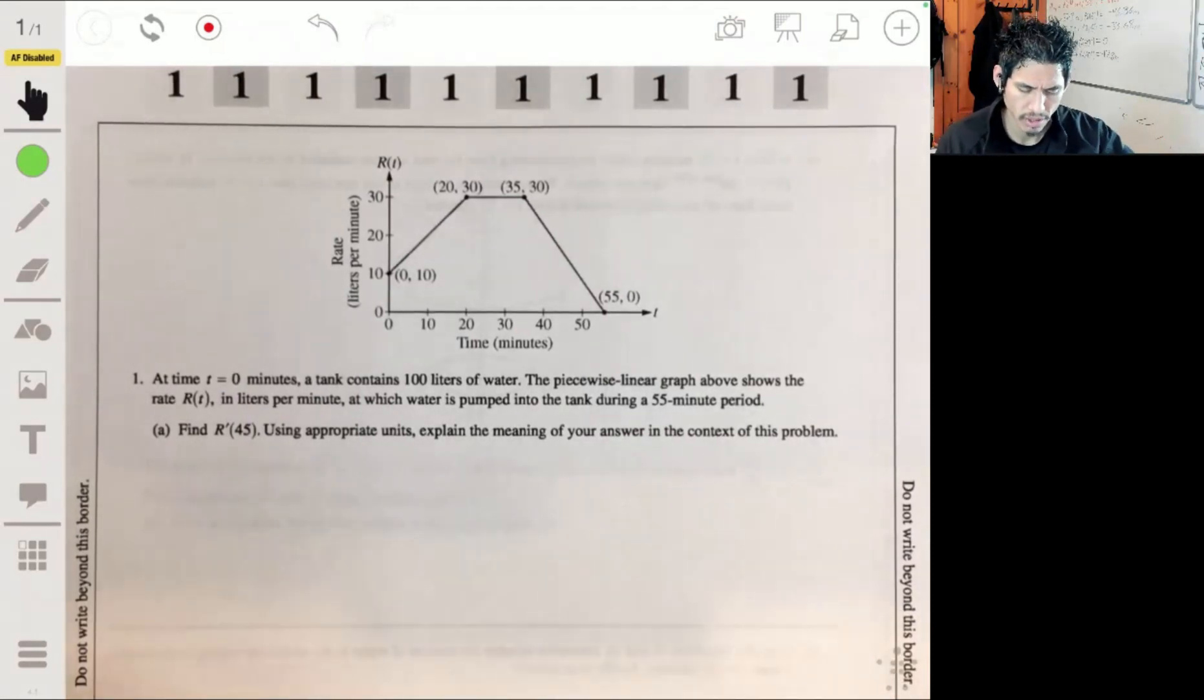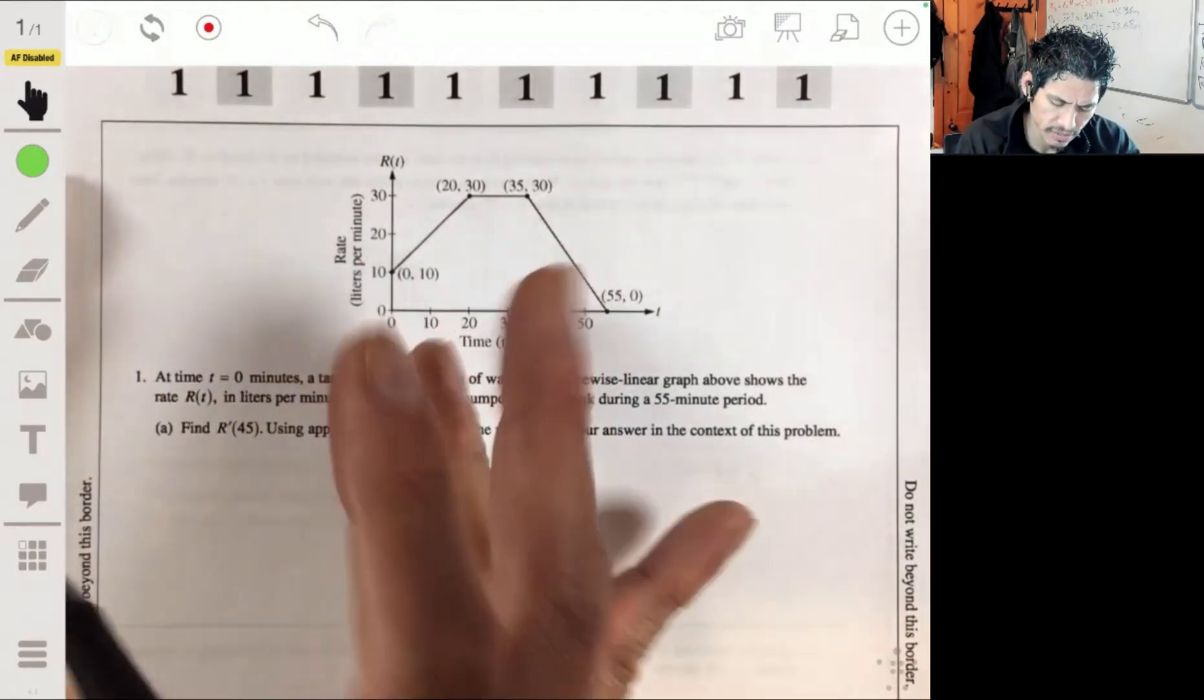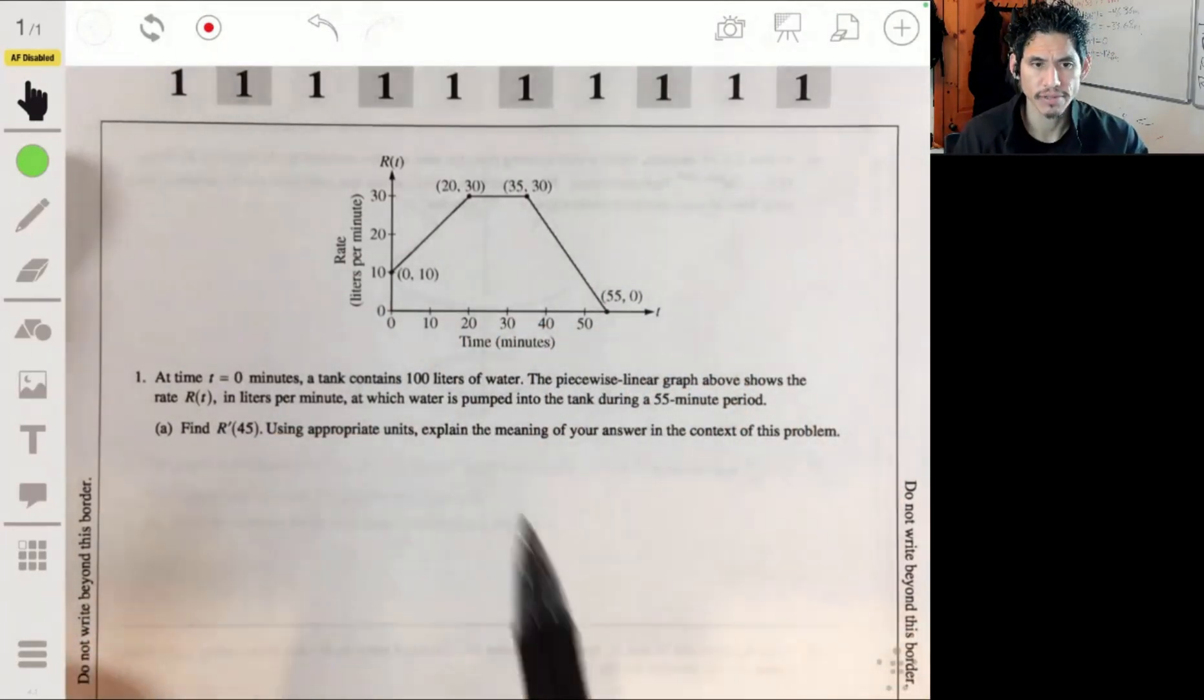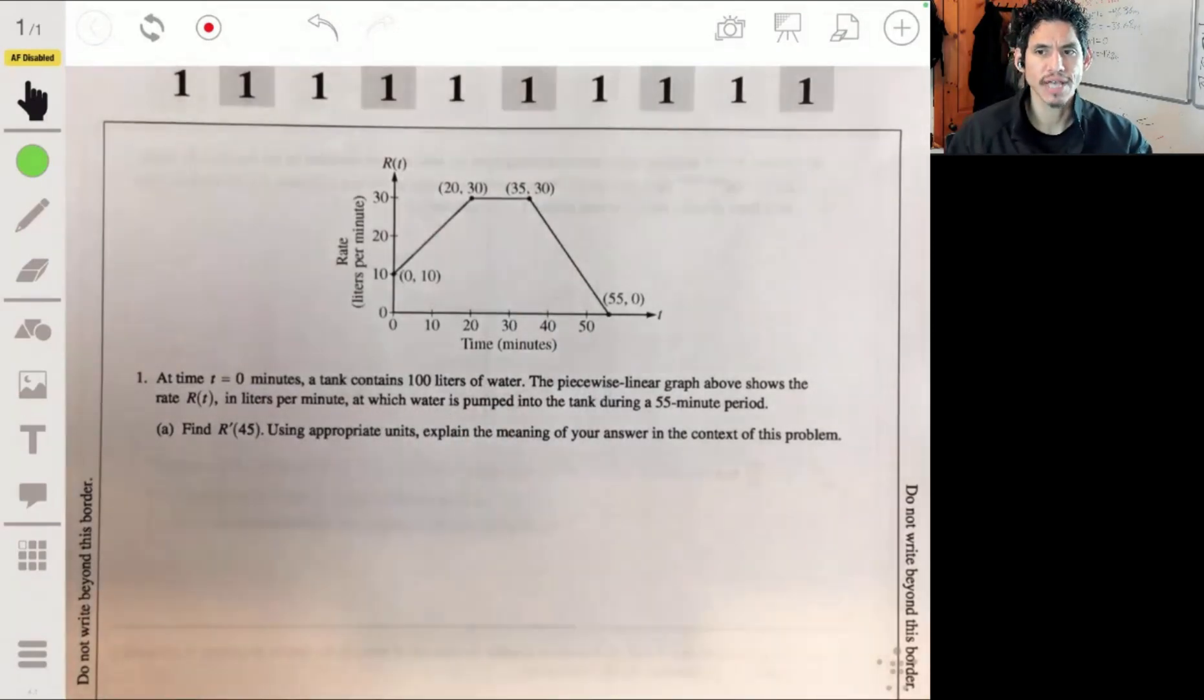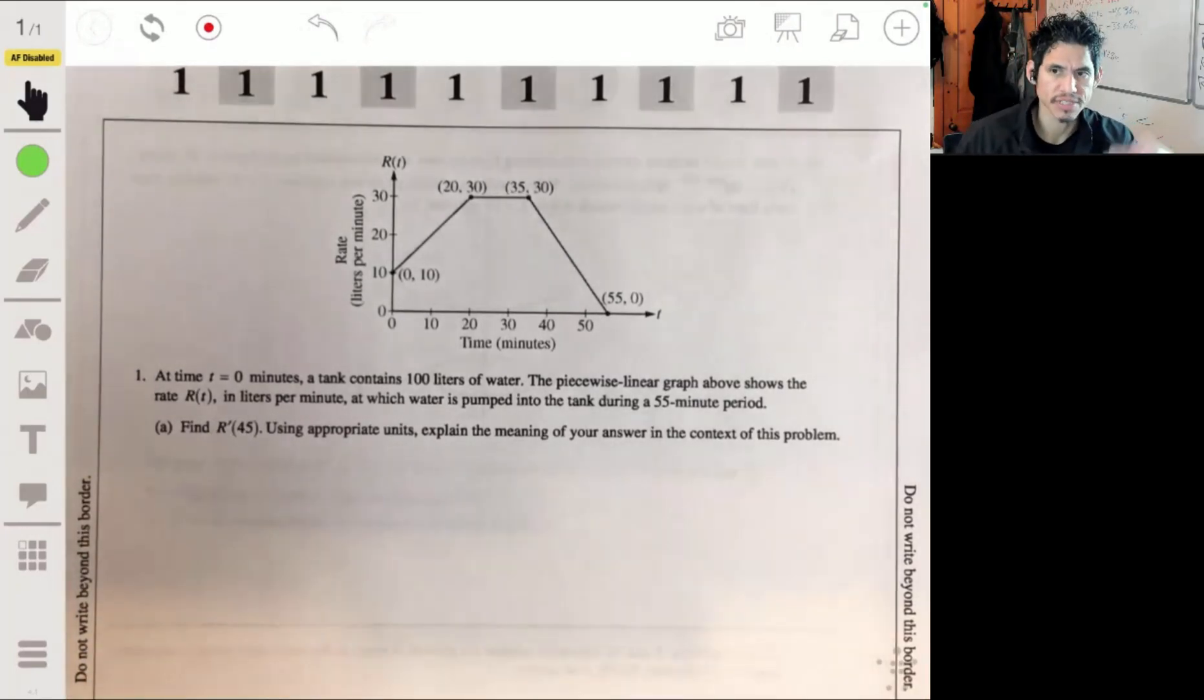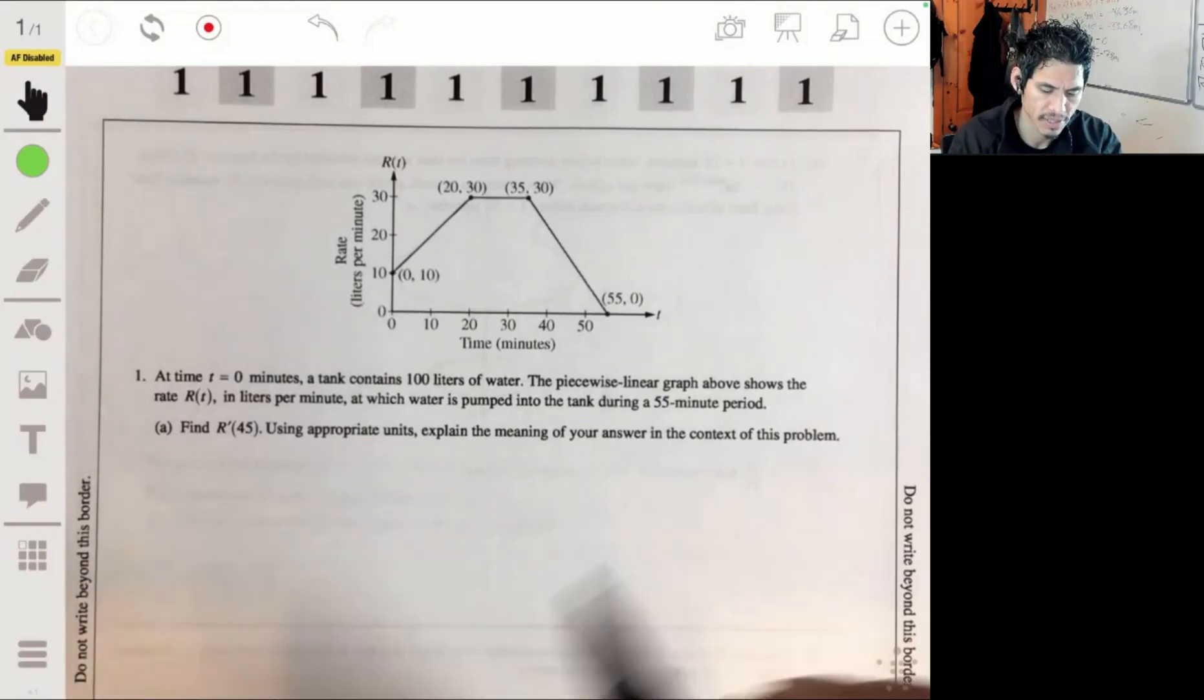Okay, not an issue. What we're talking about here is the rate of this rate. This rate describes how much water is being pumped into the tank. So then this will tell you the rate at which that rate is changing. If this is a positive number, it's saying the rate they're pumping water in is increasing. If it's negative, it means it's decreasing, slowing down. If it's zero, it's going to stay at the same rate.